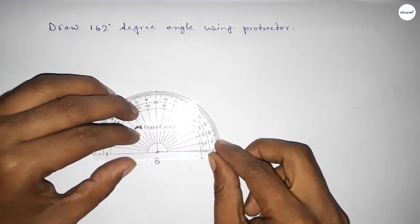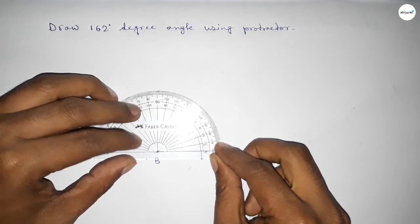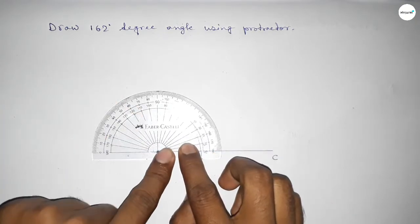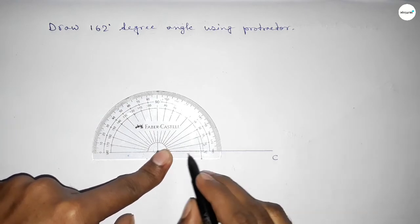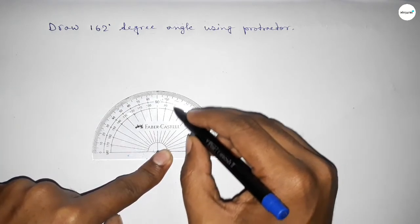Then counting the angles, so this is starting angle: 0, 10, 20, 30, 40, 50, 60, 70.